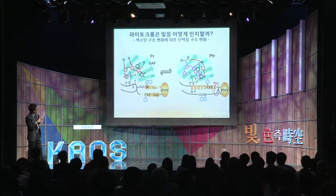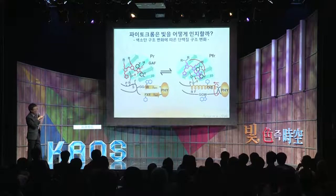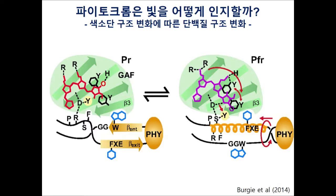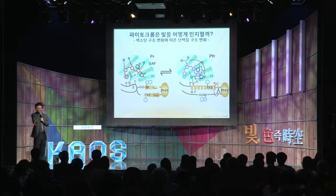PR 폼일 때는 헤어핀처럼 늘어진 끈이 위를 덮고 있습니다. 덮을 때 아스파틱 산과 알진이라는 아미노산이 서로 수소결합을 하고 있다고 생각합니다. 그러다가 적색광을 받아서 색소단이 빙그르르 돌게 되면 더 이상 이 두 아미노산이 결합을 하지 못하고, 그에 따라 헤어핀이 돌 거라고 생각합니다. 얘가 이렇게 있다가 쫙 바뀌게 되고, 그럼 그거에 따라 연결되어 있는 PHY 도메인이 돌 거라고 생각해요.